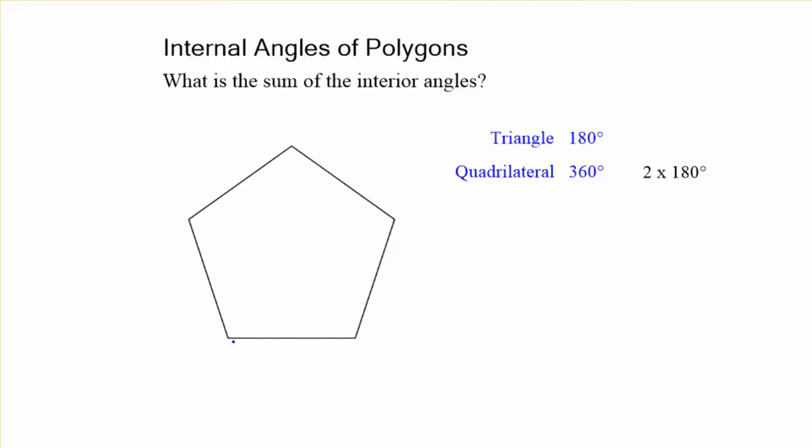What about a five-sided figure? Well, we start from that vertex and draw across, and we have one, two, three triangles. Well, three times 180 is going to give us 540 degrees. Let's go ahead and put that there as three times 180.